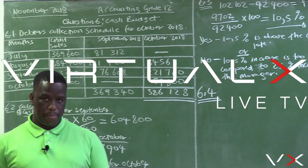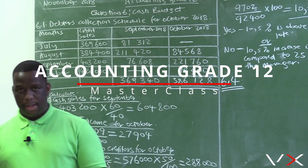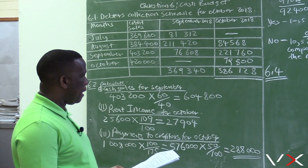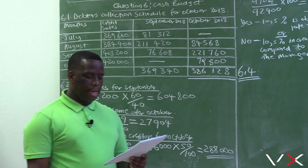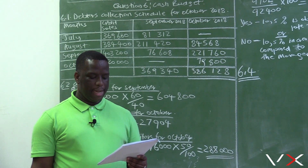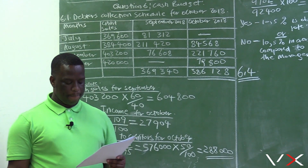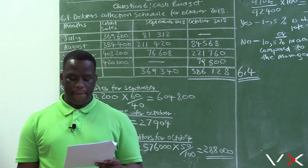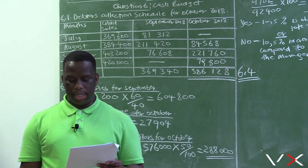6.4. Refer to Information E. A new competitor moved into the area during September 2018. Donald was not aware of the competitor and did not take any action during September. 6.4.1: Explain the effect of the new competitor on any two items in the budget for September.